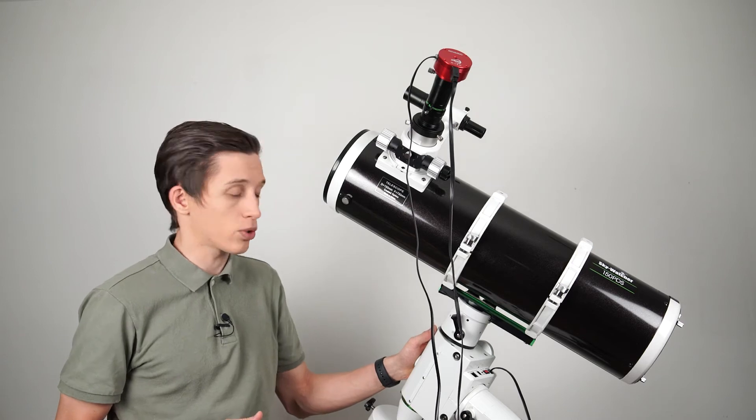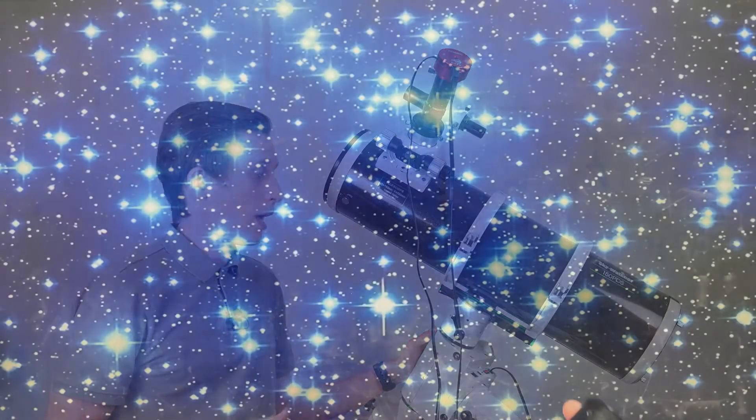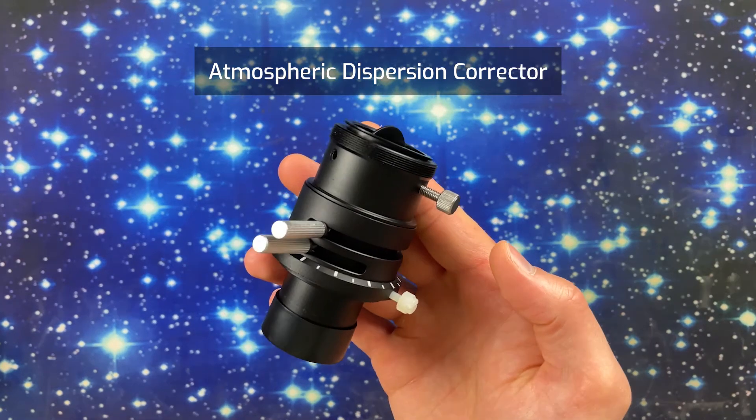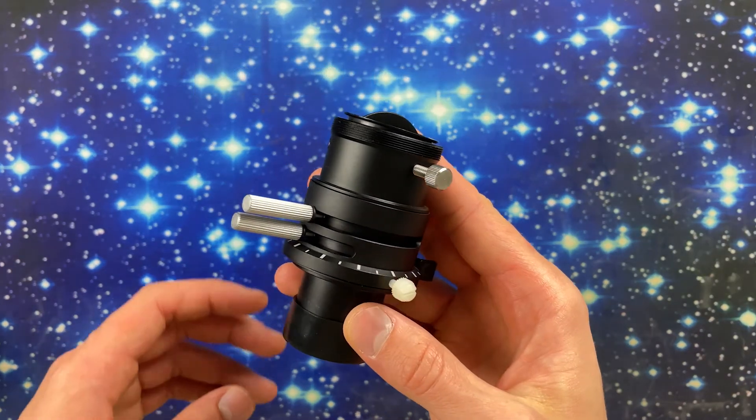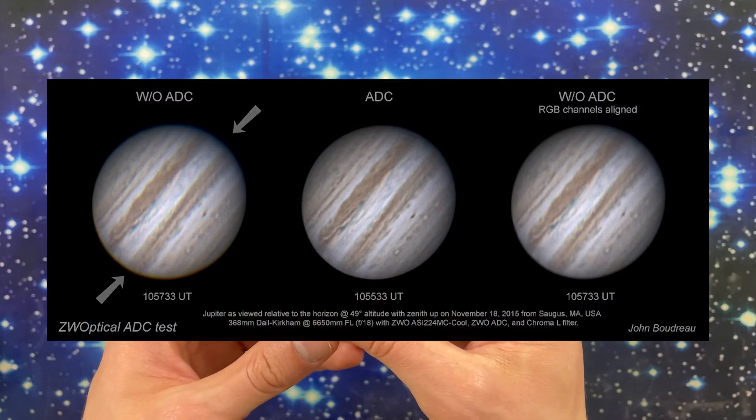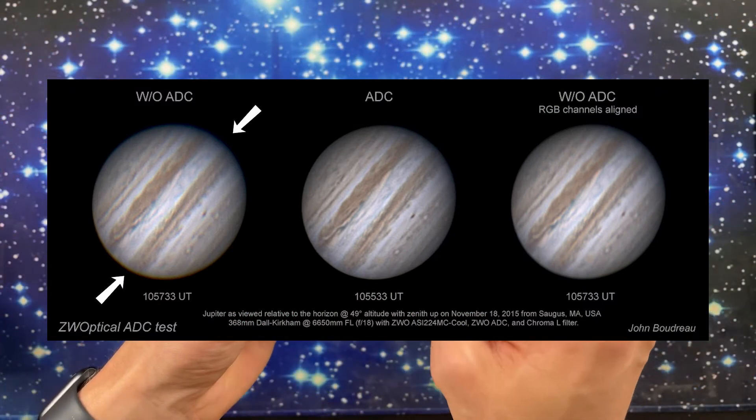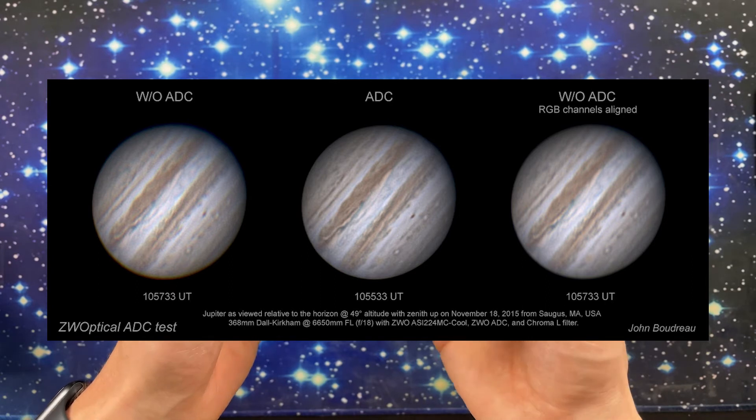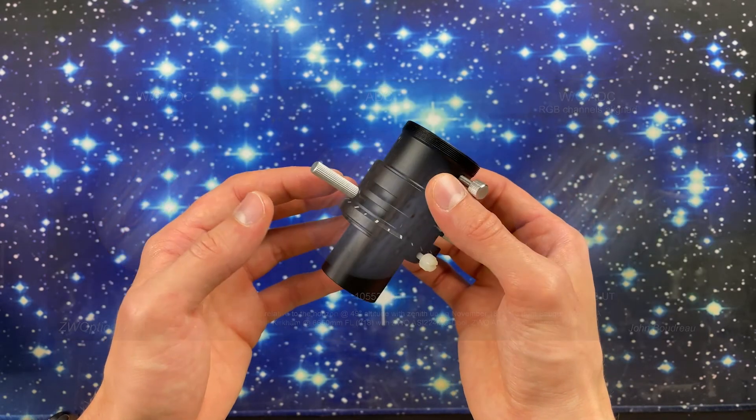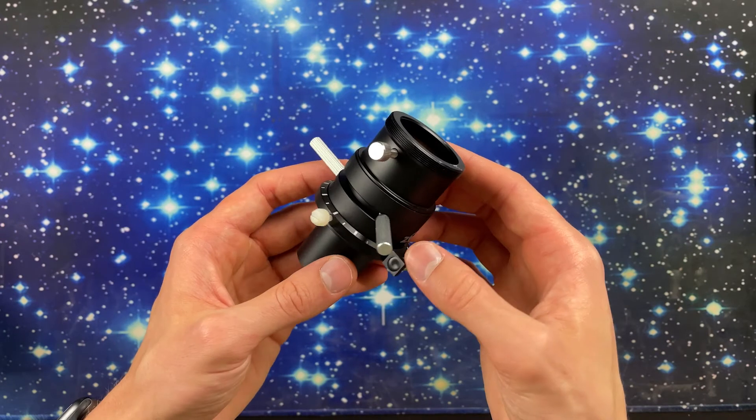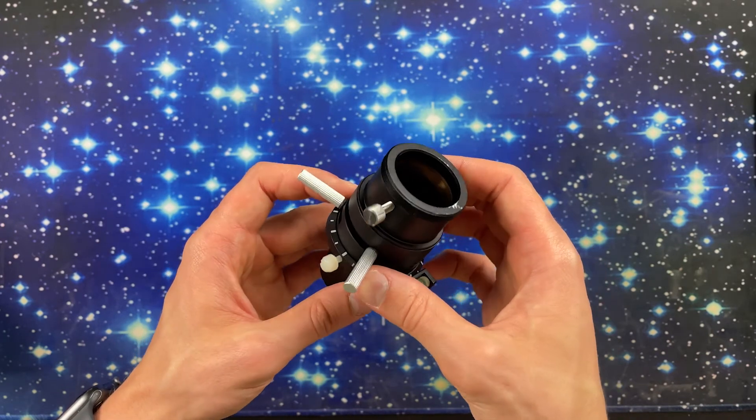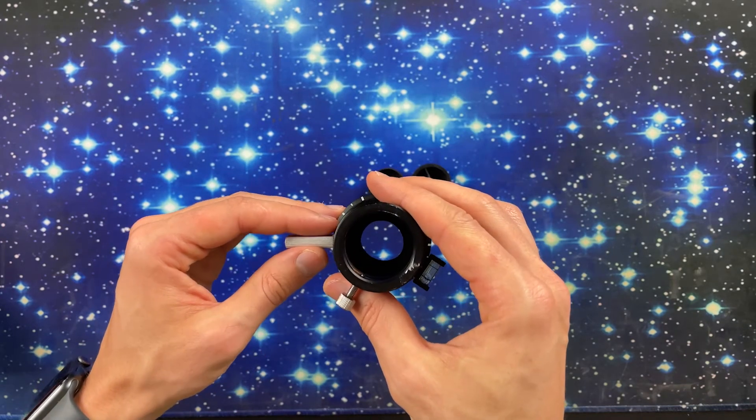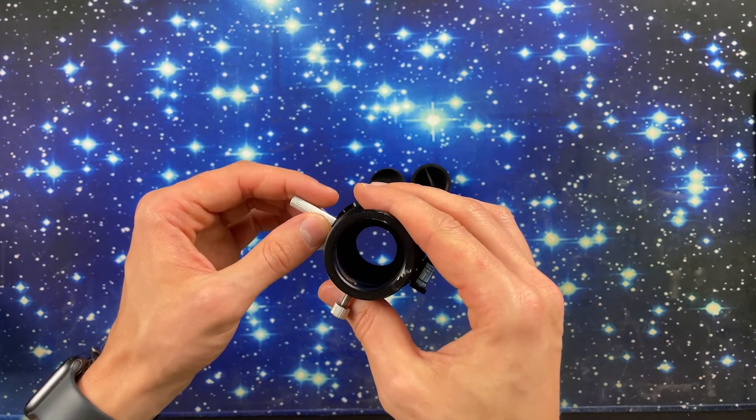And everything is mounted on the Skywatcher HEQ 5 Pro. Also I want to show you this atmospheric dispersion corrector. When you capture planet images you can see some atmospheric dispersion that looks like kind of blue and red color shades around the object you're shooting. This corrector helps to reduce this effect and make your images much better. Meanwhile this accessory is optional and you may want to use one if you have a telescope with aperture like six inch or bigger because this corrector doesn't work well with the smaller telescopes.